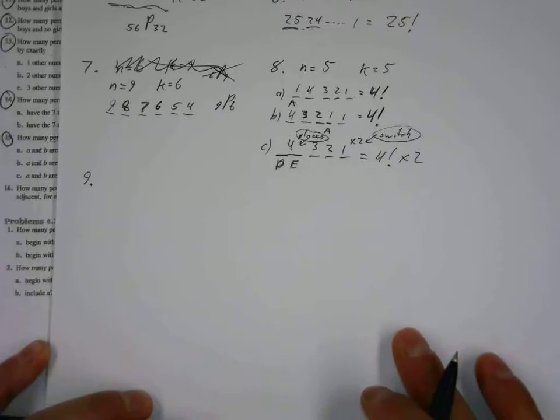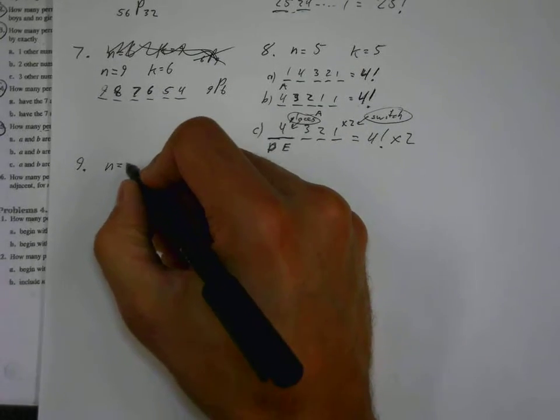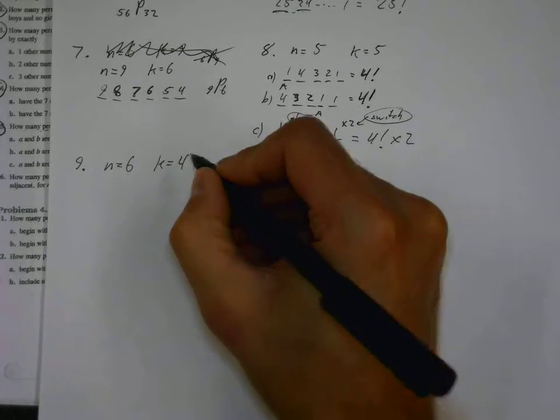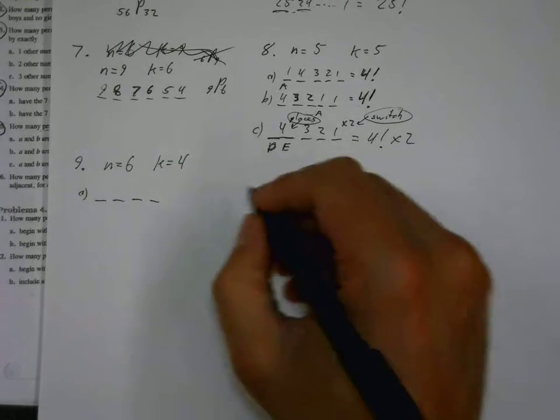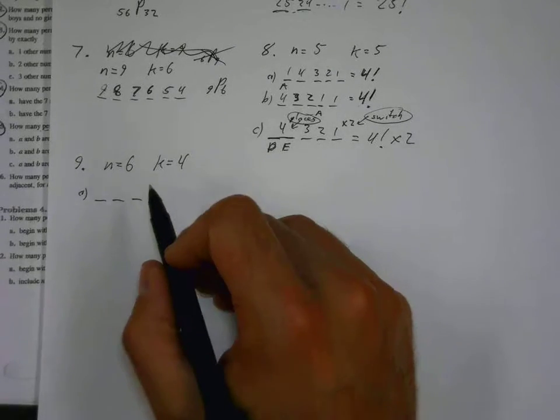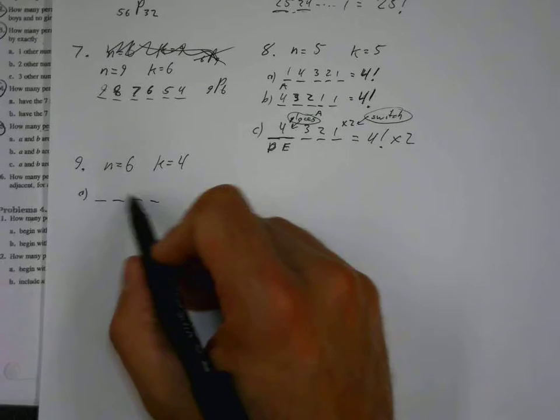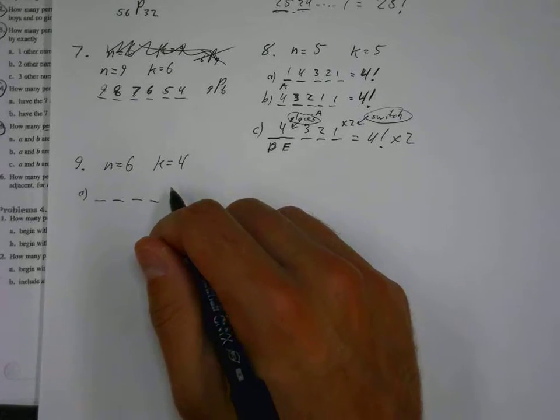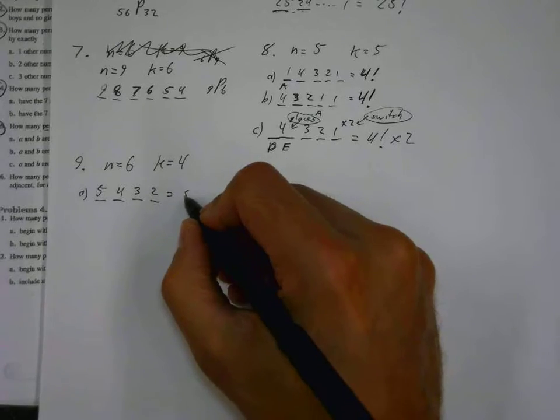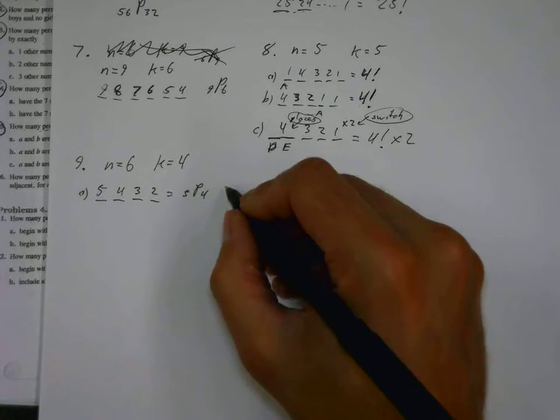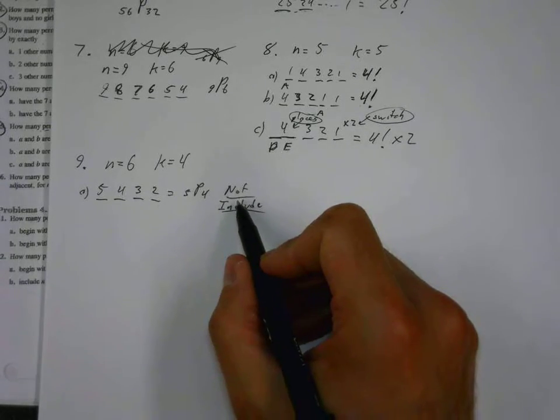Question nine. How many permutations of the numbers 1, 2, 3, 4, 5, 6, taken 4 at a time? So N is equal to 6. The numbers are 1 to 6. K is equal to 4 this time. This is not a full permutation. Part A: Do not contain 6. So this is a new one. Does not contain something. Now, what I do when it does not contain is I just take it out of the bag. So it doesn't contain the 6. So I can't put down a 6 anywhere. So I'm just going to take the 6 and I'm going to remove it from the bag entirely. So what does that do? It means that we start here with 5, 4, 3, 2. So we count down from 5. So this is going to be 5P4. So when you can't include it anywhere, just take it out of the bag.